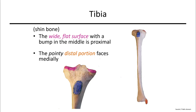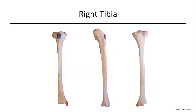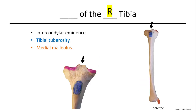The tibia is your large shin bone. To orient it, the wide flat surface is the top. A really pointy, knobby portion faces anterior. On the distal end there is a hook that faces medially — this is what people call the ankle bone, specifically the medial malleolus. Features of the right tibia include the intercondylar eminence — a prominent ridge between the femoral condyles — the tibial tuberosity on the anterior surface where the patellar ligament attaches, and the medial malleolus at the distal end.